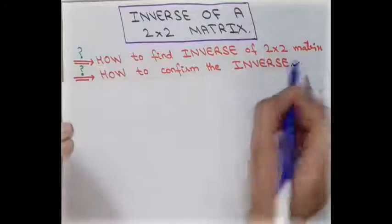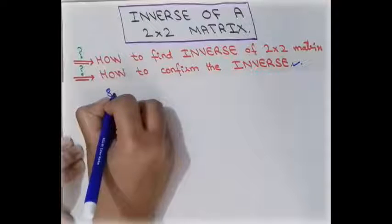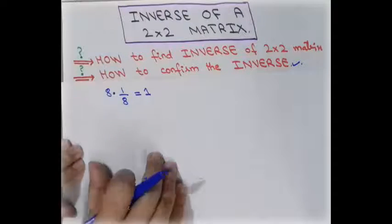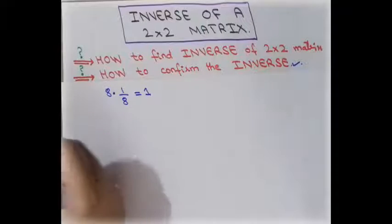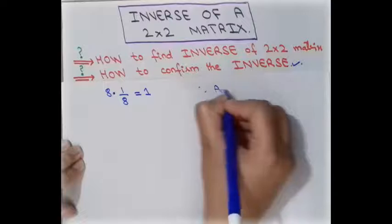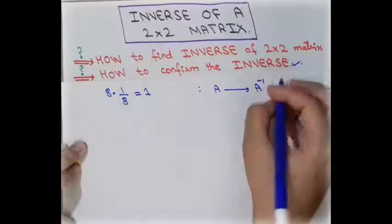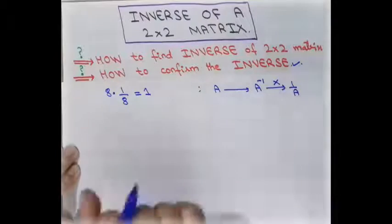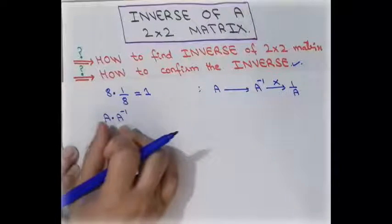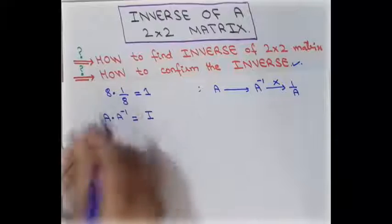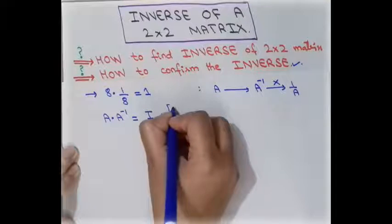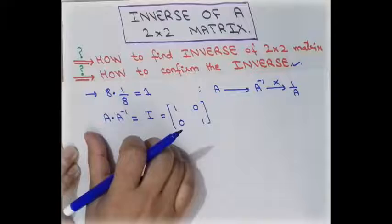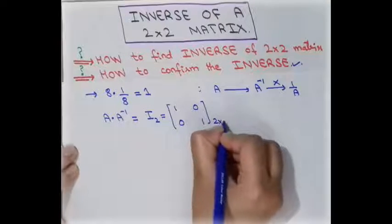Now to answer the second objective: if we have the number 8 and multiply it by 1/8, the answer is 1 — the inverse of 8 is 1/8. The inverse of a matrix is the same idea but written differently; we write A inverse rather than 1/A because we cannot divide by a matrix. If we multiply matrix A by its inverse, we get the identity matrix — the matrix with 1s on the diagonal and all other elements zero — which is the identity matrix of order 2×2.